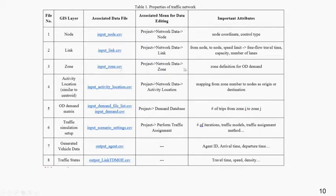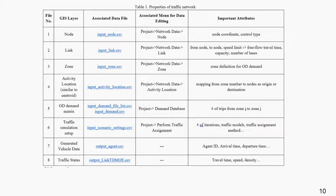We have input zone dot CSV with the zone definition for the OD demand matrix. Input activity location provides the mapping from zone number to physical nodes at the origin or destination when calculating the shortest path. Item five is the input demand file list, where you can specify different demand formats and file names. Input demand dot CSV is one example in the three-corridor dataset. Number six is input scenario setting, where you can specify the number of iterations, different traffic flow models, traffic assembly models, and signal representation.